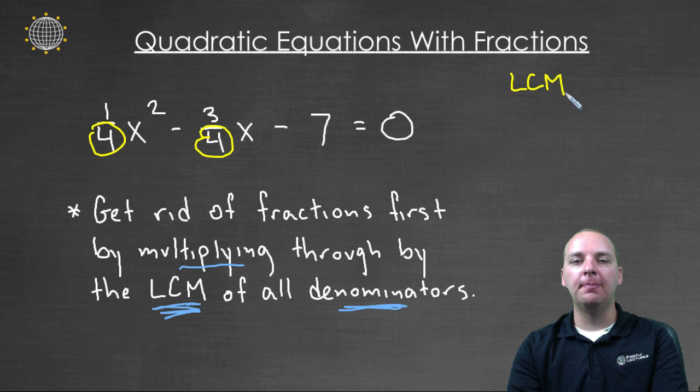So this one's a pretty straightforward one. Our only denominators are four and four, so obviously the least common multiple of these two guys would be four. And so what we're going to do is multiply the left hand side by four, and the right hand side by four.